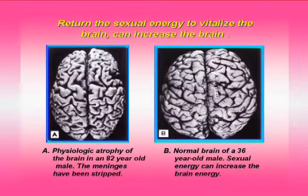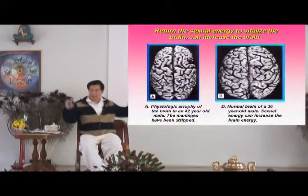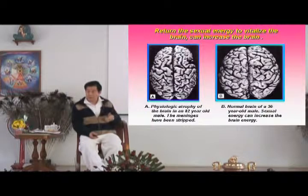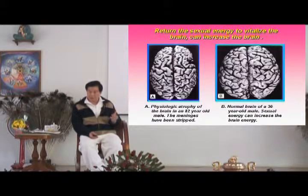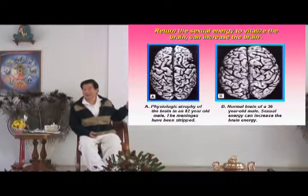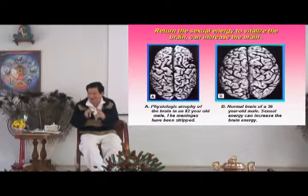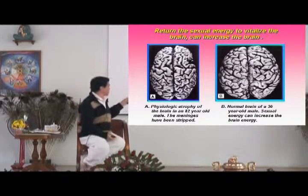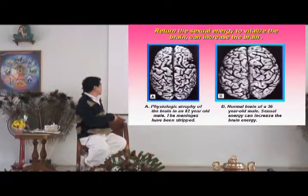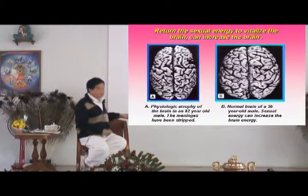They discovered that an old man's brain gets trimmed down and becomes very small compared to a young man's brain of the same body size. The Tao text, written thousands of years ago, says that when men practice excessive ejaculation, it empties the brain. So this old man ejaculated a lot, and the brain became empty and got smaller. Every time ejaculation is excessive, it takes the energy from the brain out, and the brain gets trimmed down smaller.